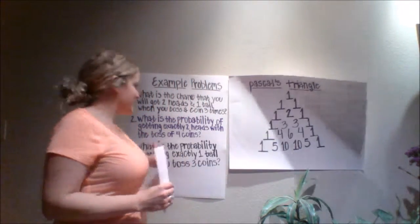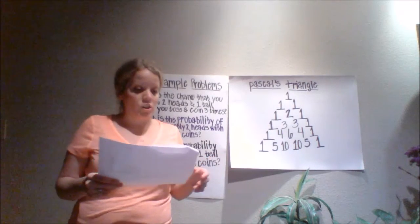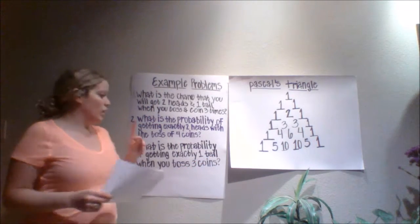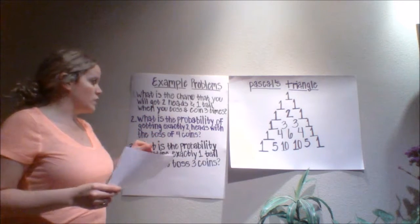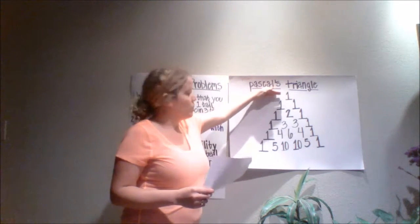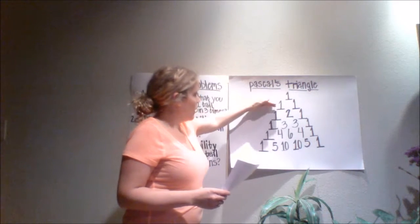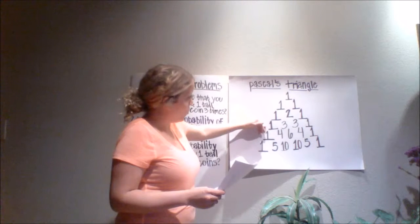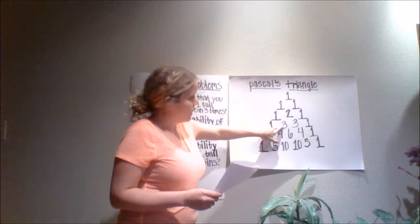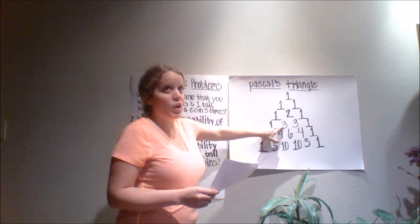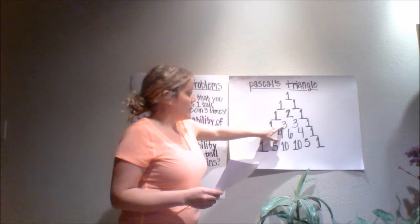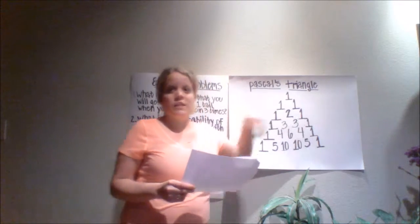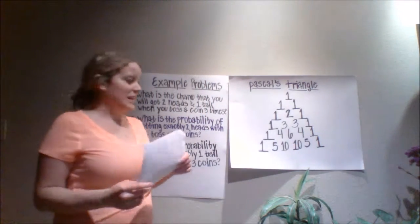Let's read the last question together: what is the probability of getting exactly one tail when you toss three coins? This is row 0, then 1, 2, 3, and then you go over 1 — again this is position 0, then 1. So 3 is going to be our numerator. You add the sum of the row: 3 plus 3 is 6, plus 1 is 7, plus 1 is 8. So the answer is three eighths.